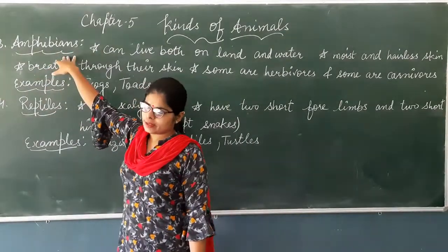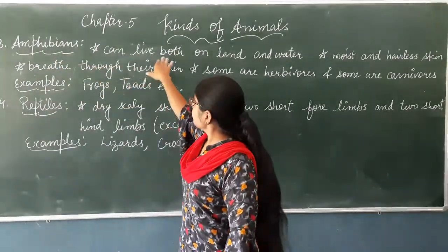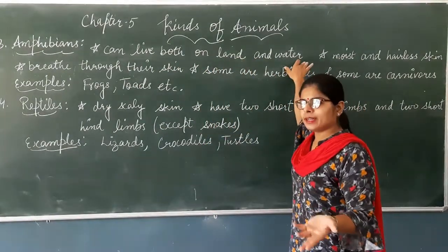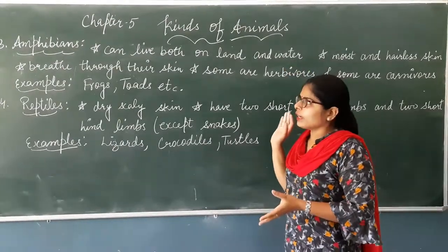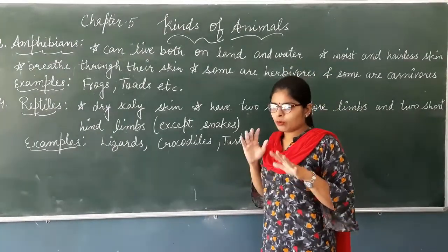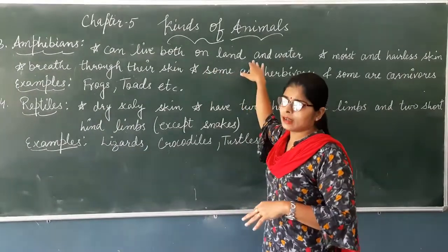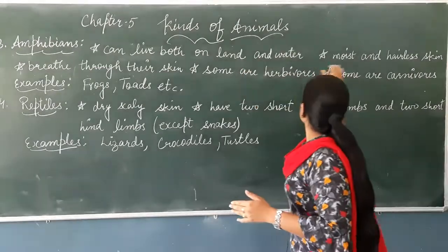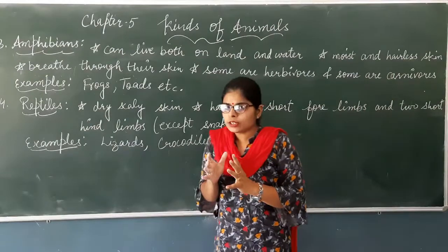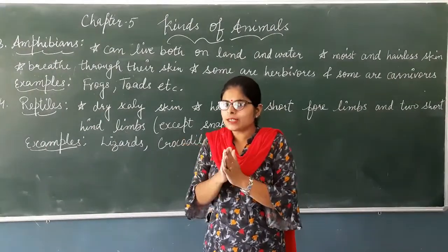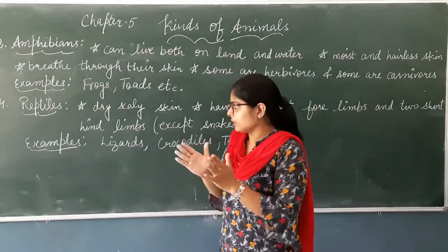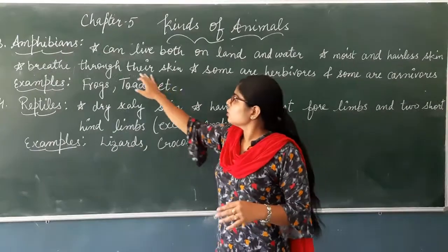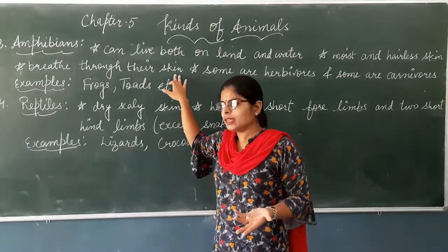The third type is amphibians. Amphibians are those that can survive both on land and in water — unlike fish, which can only survive in water. Amphibians can live well in both places. They have moist and hairless skin, meaning there is no hair on their skin. When they are in water, they breathe through their skin.